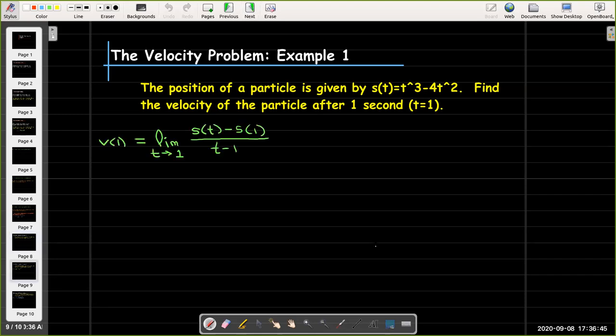So we're going to have to take the limit. And if I make my substitution here, s(t) would be t cubed minus 4t squared minus s(1). So when t equals 1, I'll have 1 minus 4, all over t minus 1.